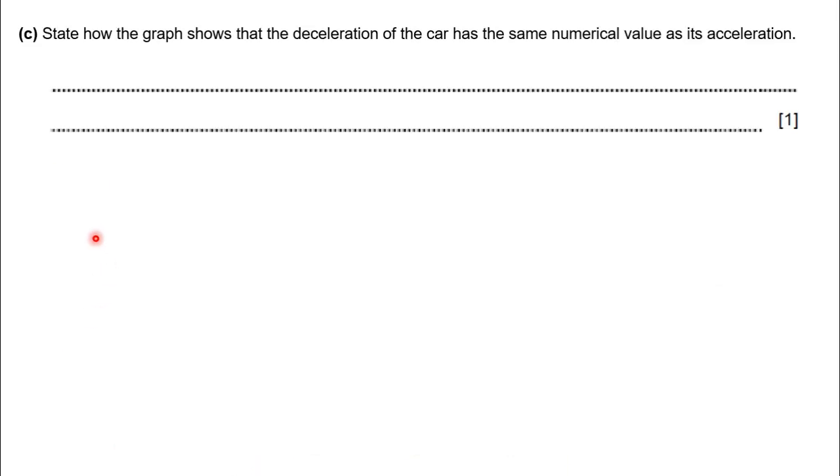Now we move into our final section of the question. The question asks: How does the graph show that the deceleration of the car has the same numerical value as its acceleration? This section has only one mark, so they don't expect a long answer. But it should be descriptive and must include all the keywords that they expect.